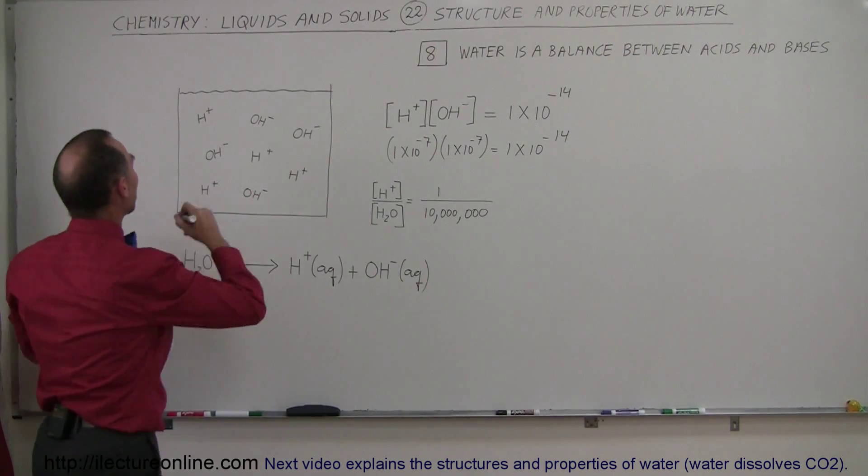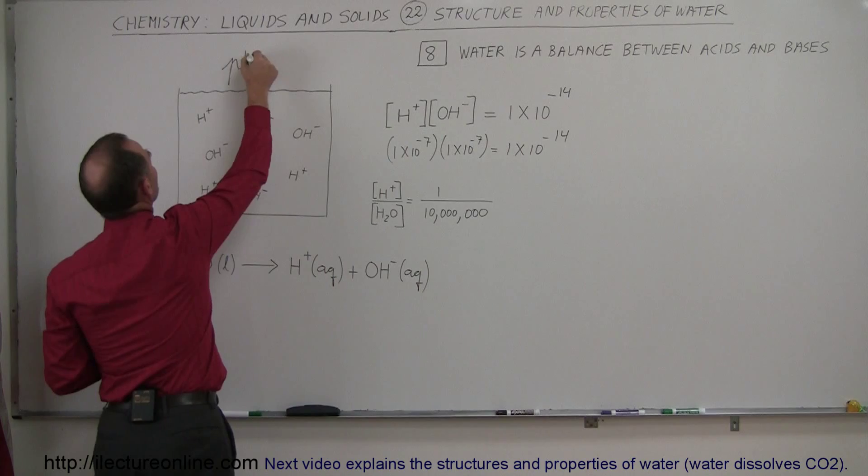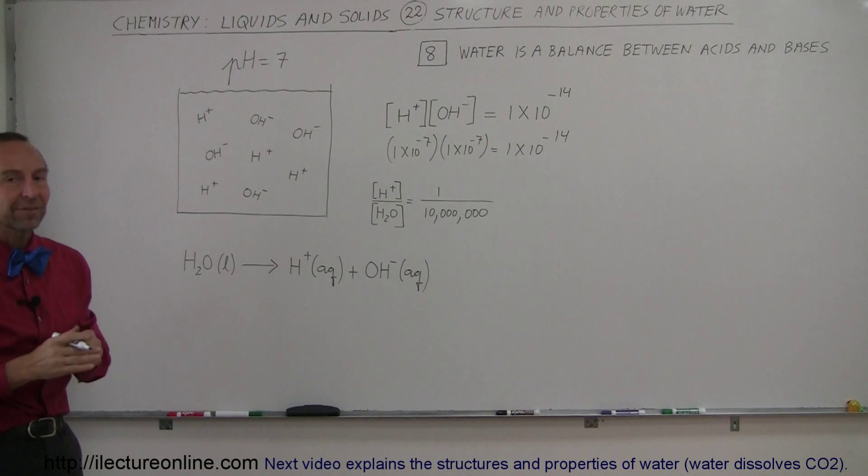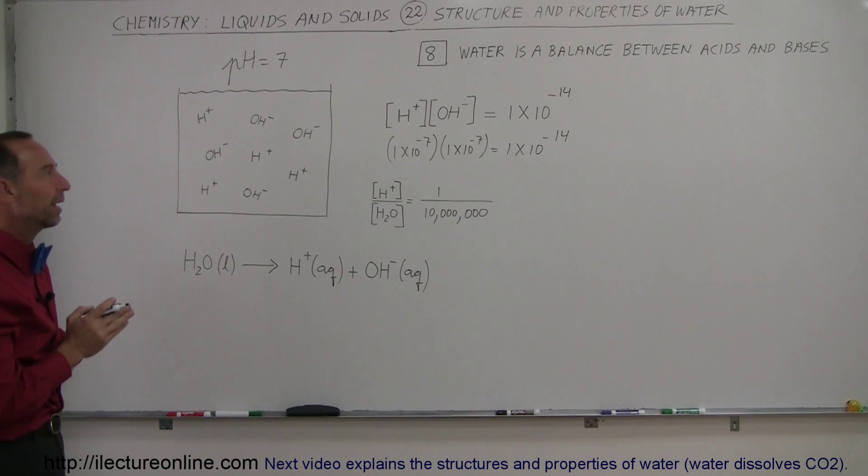And at that point the pH level of water will be equal to 7. That's considered neutral between acids and bases. That's the in-between point between acids and bases.